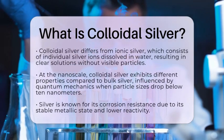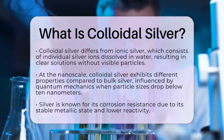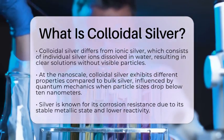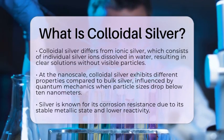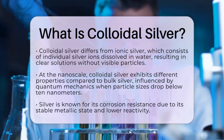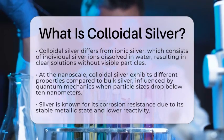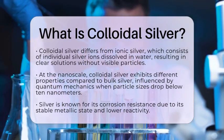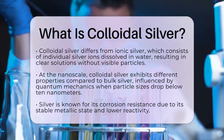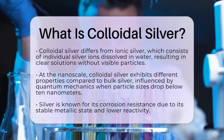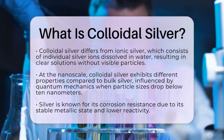When we look at colloidal silver at the nanoscale, we see that its properties change compared to bulk silver. When the particle sizes drop below about 10 nanometers, classical physics does not fully explain their behavior anymore. Instead, quantum mechanical effects come into play, affecting how these tiny particles interact with electrons and light.